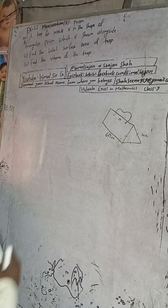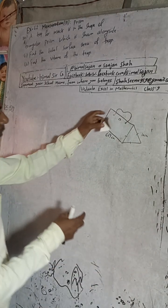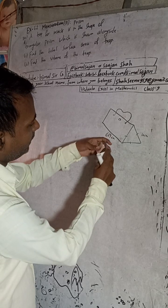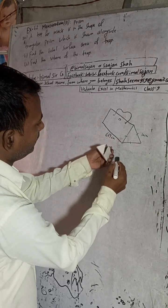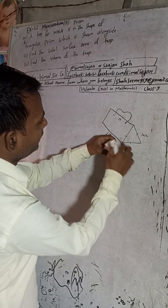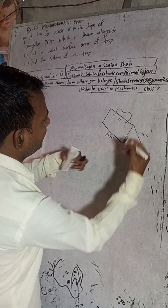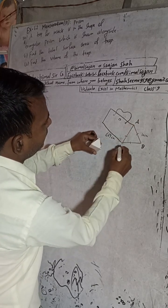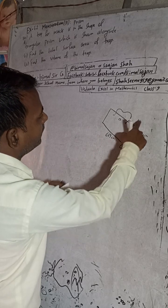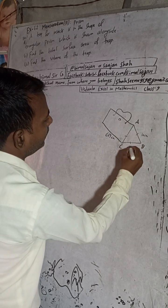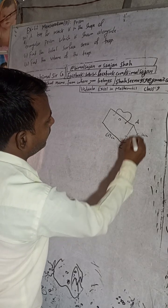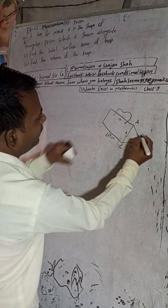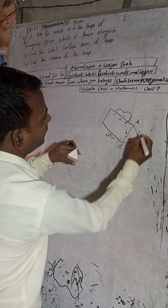Now if I label the triangle: this is vertex A, this is vertex B, and this is C. Then this side opposite to A is small a, this side is small b, and this side is small c. These correspond to the breadth of each rectangular face of the prism.